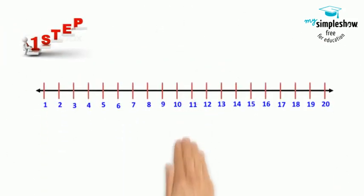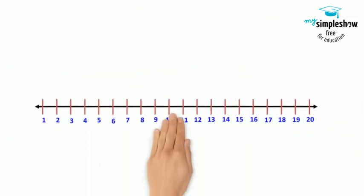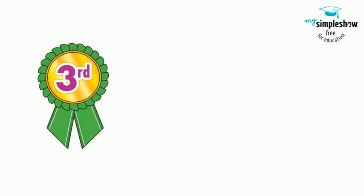First step: on the number line, put your finger on the number 15. Second step: after that, go back by 8 places on the number line. And in the third or the final step, stop here.